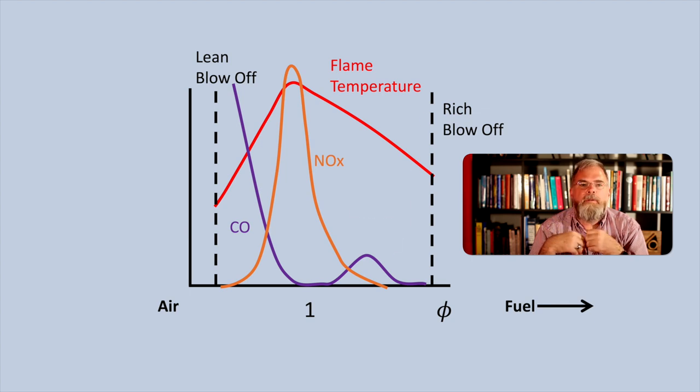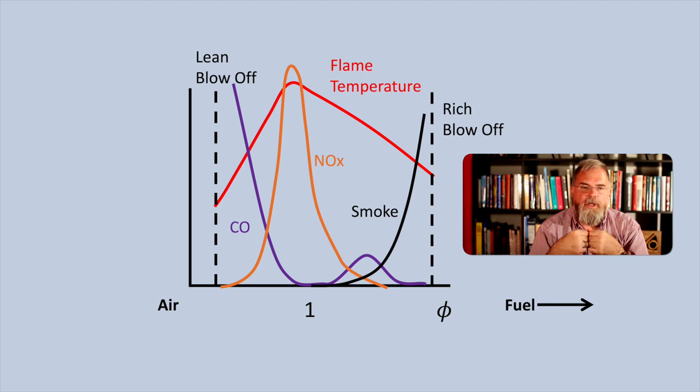As we approach the rich blow-off limit, smoke will form. Smoke is solid particulate consisting mostly of carbon which condenses out of the flame. Smoke is a problem as it can harm the lungs of humans and other animals and is believed to cause cancer. Smoke forms when there is insufficient oxygen to oxidize all of the carbon in the fuel. As the reaction rate is highest close to an equivalence ratio of one, the majority of the fuel will be oxidized close to this value in the flame. Thus this sort of combustion tends to produce a lot of NOx. However, as the rate of reaction is limited by the mixing rate between the fuel and air, this sort of combustion also tends to oxidize less CO and produce more smoke, leading to higher CO and smoke emissions.